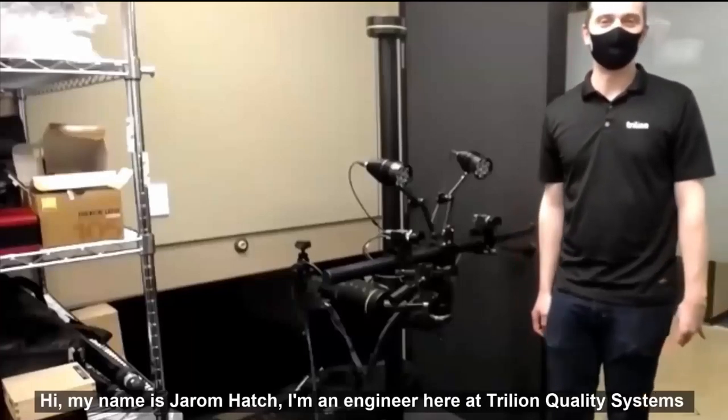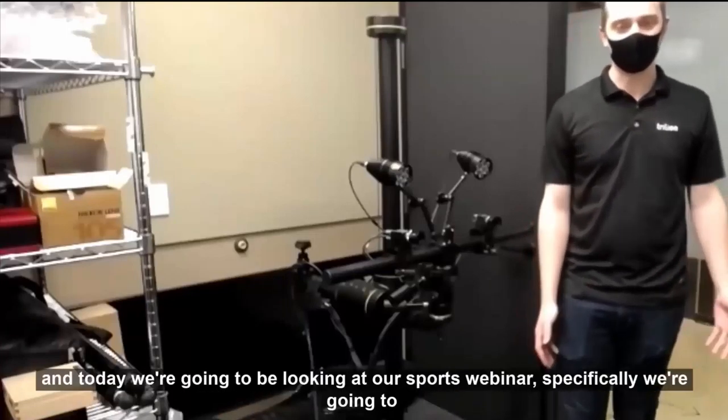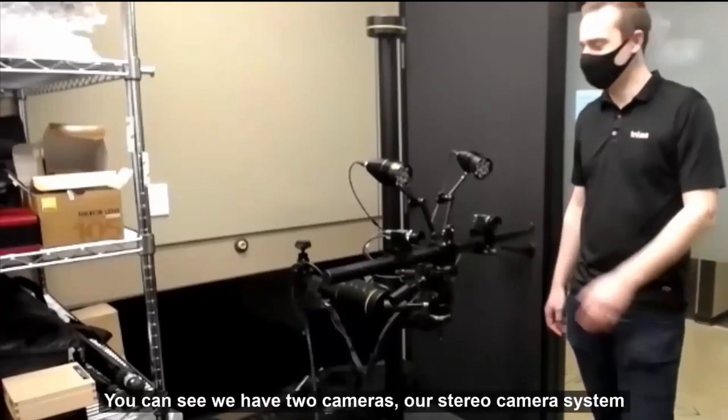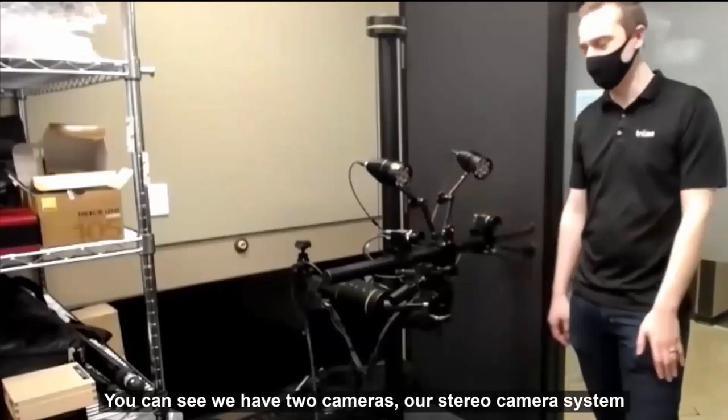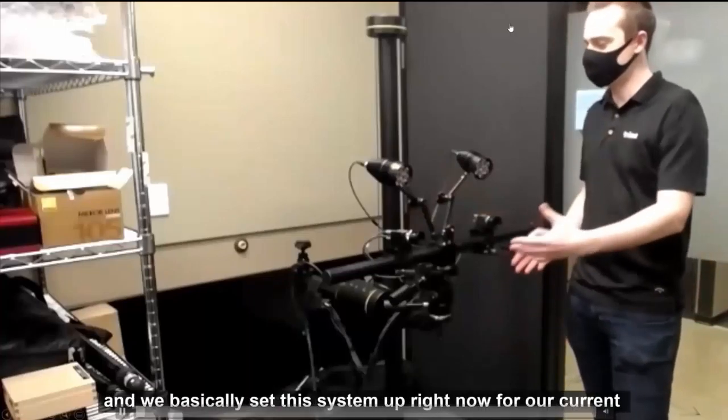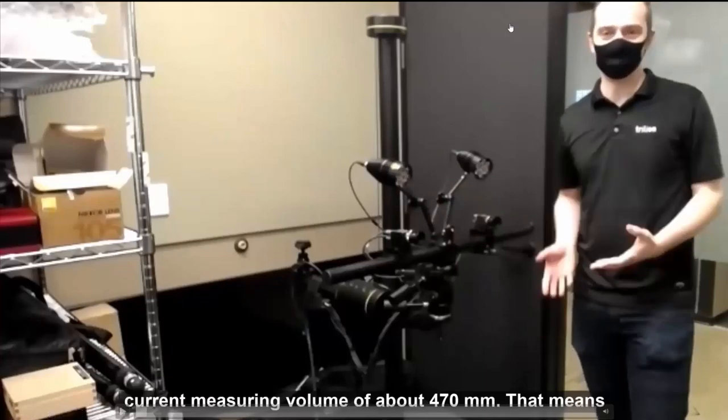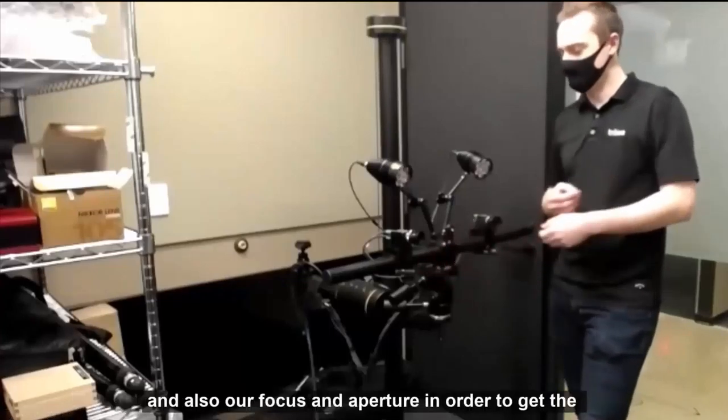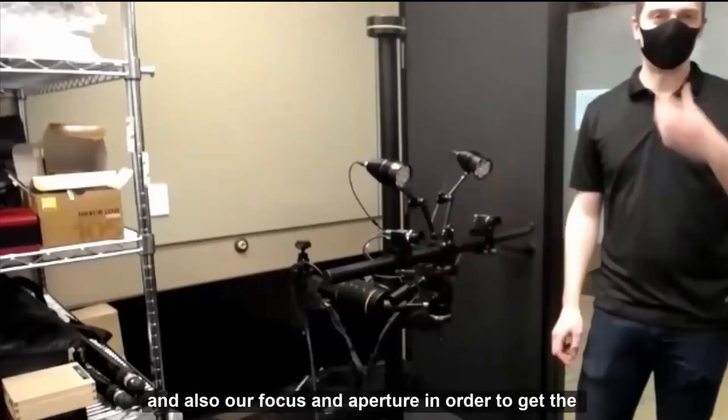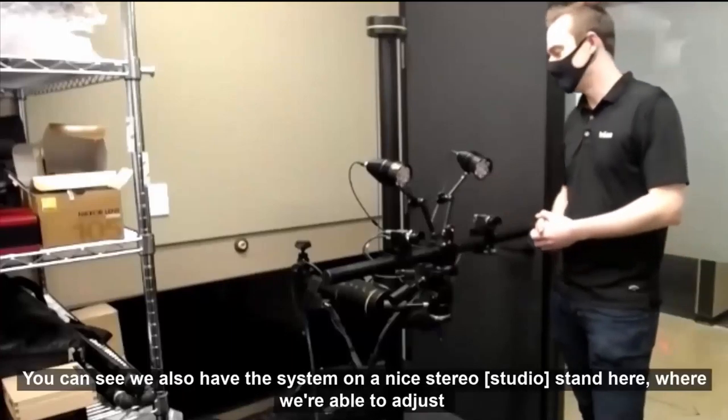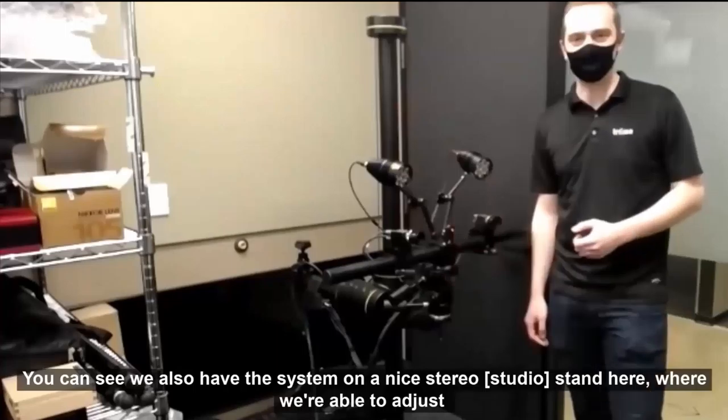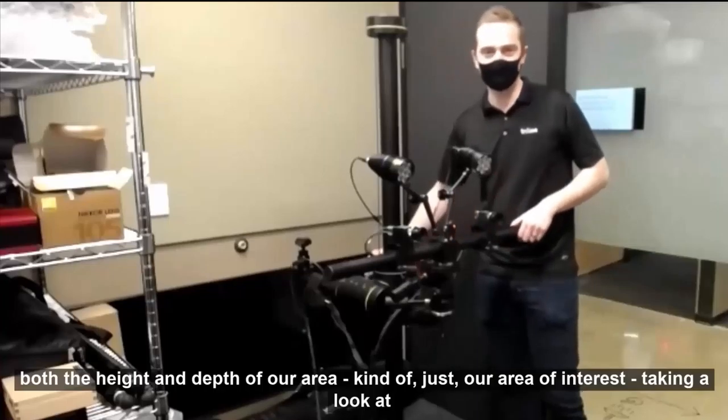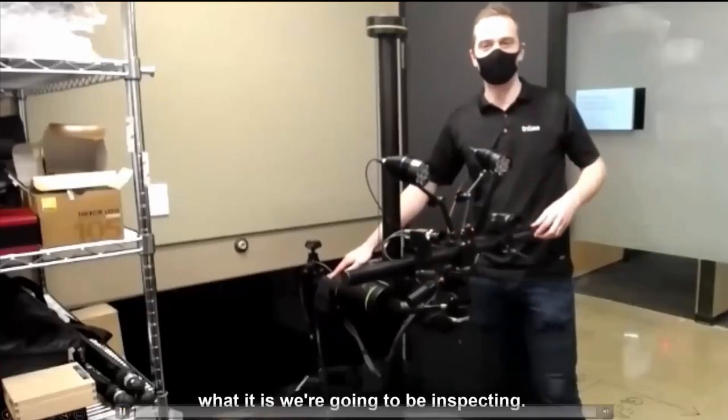Hi, my name is Jerem. I'm an engineer here at Trillion Quality Systems, and today we're going to be looking at our sports webinar. Specifically, we're going to use our 12 megapixel ARAMIS camera system here. You can see we have two cameras, our stereo camera system. We've set this system up for our current measuring volume, about 470 millimeters. We have to change the distance between our cameras, and also our focus and aperture, to get the correct focus and depth of field. You can see the system on a nice stereo stand where we can adjust both the height and depth.